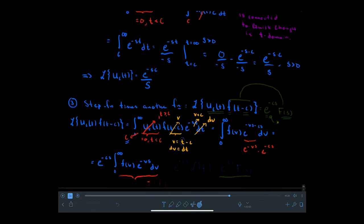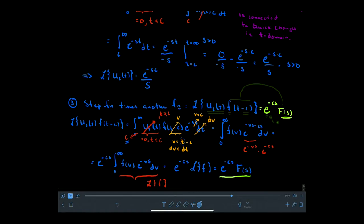This integral from 0 to infinity of f(v) e^{-vs} dv is itself the Laplace transform of f. So we have e^{-cs} times the Laplace transform of f, or e^{-cs} times F(s). The Laplace transform of a step function times a shifted function equals e^{-cs} F(s), where the exponential indicates the time delay. The e^{-cs} in the Laplace domain is saying: wait c seconds, then turn on the f function — shifted so that when it turns on, it behaves as if that were time zero.